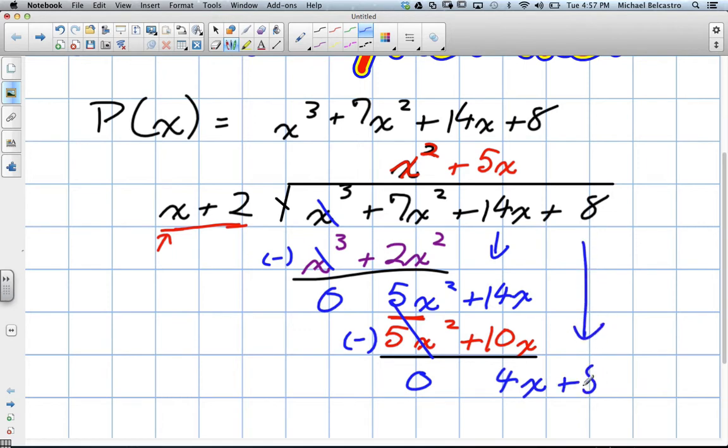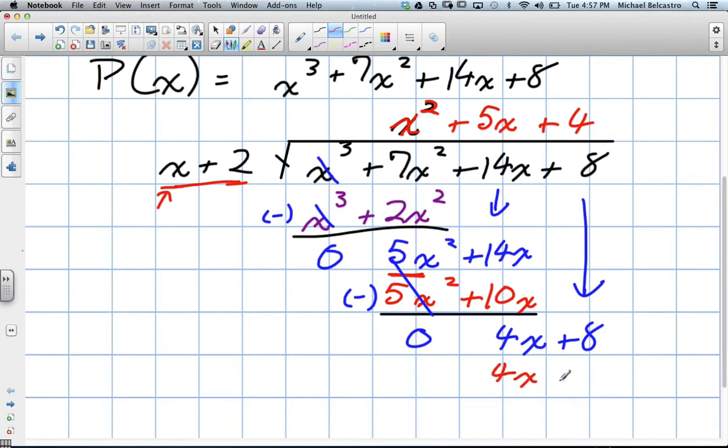4x plus 8. Same idea, we need to eliminate. For the 4x, what do we multiply by? 4. Just the value of 4. So we do that, we get 4x plus 8, and it turns out the remainder is zero. Very simple idea.